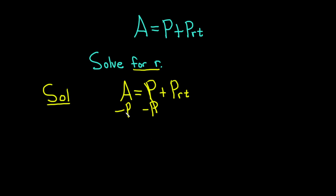So we're left with A minus P on the left-hand side, and that's equal to P, and then we have the R and the T. And again, we're looking for little r, but it's being multiplied by the P and the T.